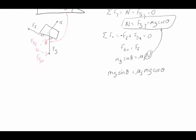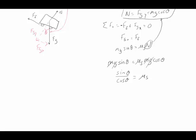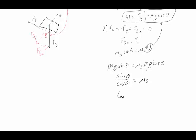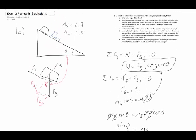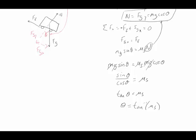Now the masses cancel out and g cancels out — it doesn't matter how heavy the car is or even whether we're on Earth. We get sine theta over cosine theta equals mu_s, and since sine over cosine is just tangent, we get tangent theta equals mu_s, so theta equals the inverse tangent of mu_s. Plugging in mu_s equals 0.7, we get theta equals 35 degrees.